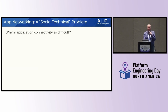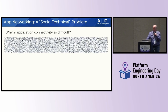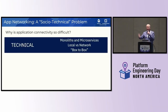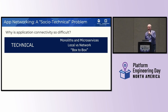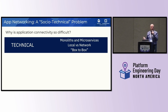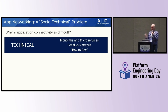So why is application networking or application connectivity so difficult? First, there's a technical challenge. Many of you are probably engaged in some journey from monoliths to microservices. Many companies, especially those we work with at IBM, are engaged in the technical challenges of local versus network development and their evolving landscape. At a technical level, you're trying to get boxes to talk to boxes, whether those are physical or virtual.